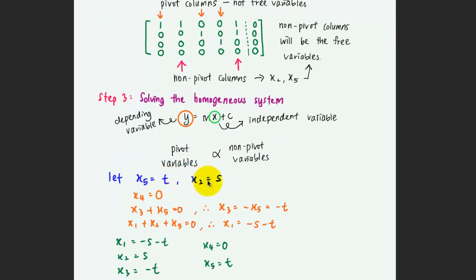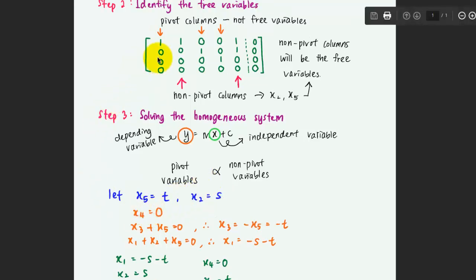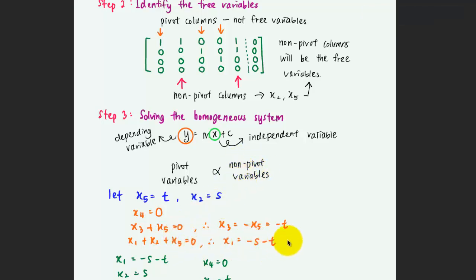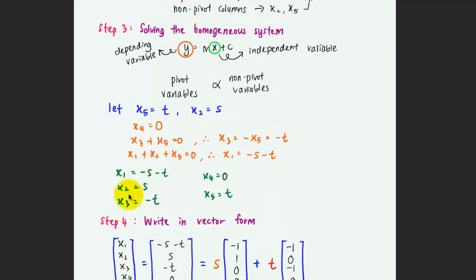Let x5 equal t and x2 equal s, where t and s are free variable parameters. From the reduced row echelon form, x4 equals 0. For the second row, x3 plus x5 equals 0, so x3 equals negative x5, which is negative t. For the first row, x1 plus x2 plus x5 equals 0, so x1 equals negative s minus t. So x1 is negative s minus t, x2 is s, x3 is negative t, x4 is 0, and x5 is t.